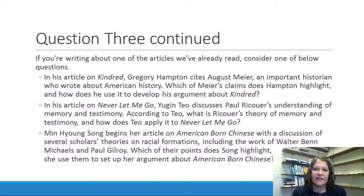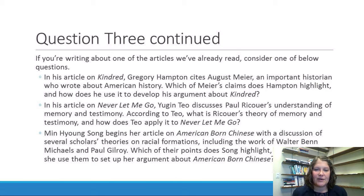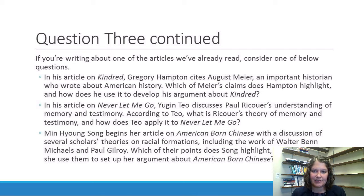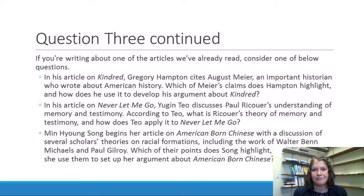If you're writing on the article on Kindred by Gregory Hampton, I especially want you to think about what Hampton does with the ideas of August Meyer, who is an important historian of African-American history. Which of Meyer's claims does Hampton highlight in his article? And how does he use those to develop his own argument about Kindred? What ideas of Meyer's does Hampton pick up on, and then how does Hampton build on and apply those ideas to his own interpretation of Kindred?